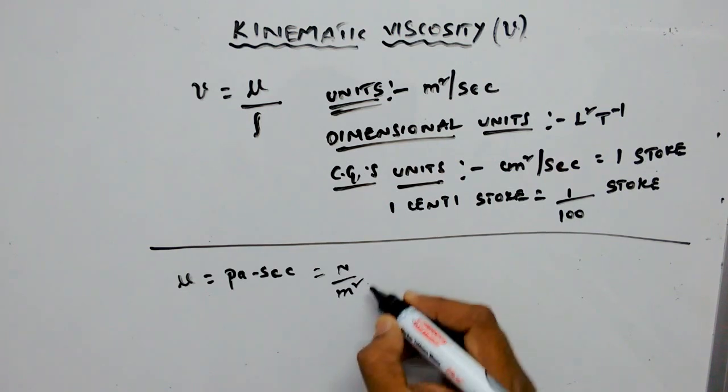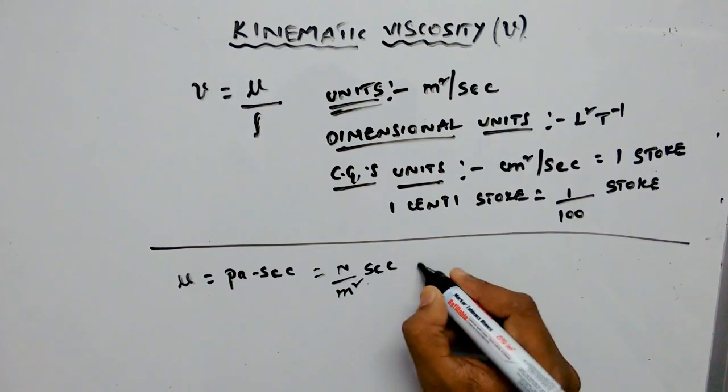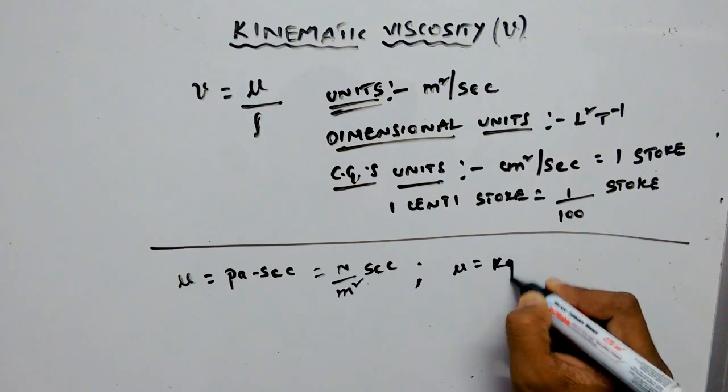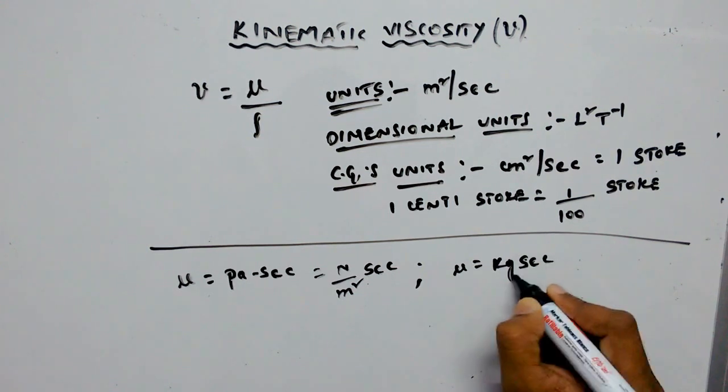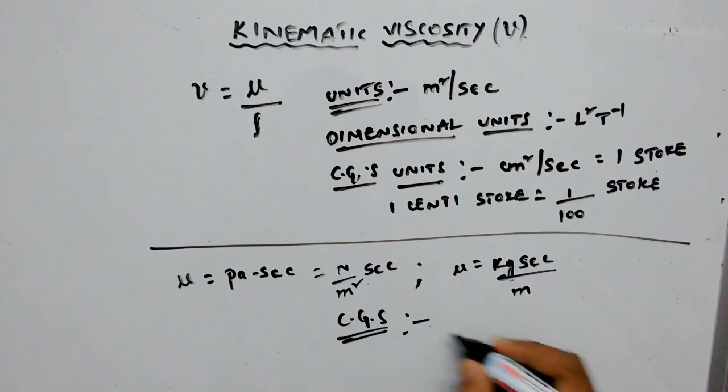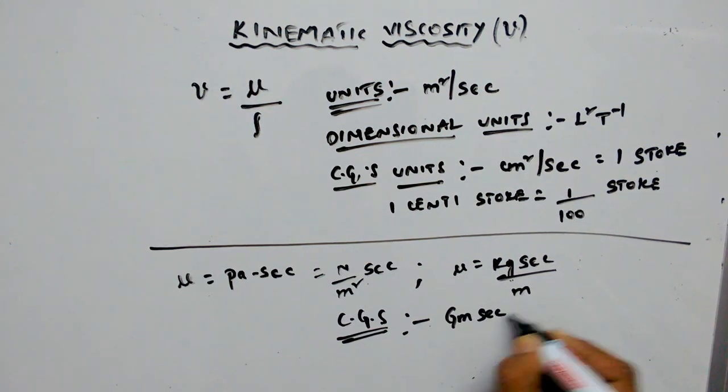newton per meter squared per second in the MKS system. In the CGS system, gram second per centimeter. We can write one gram second per centimeter...